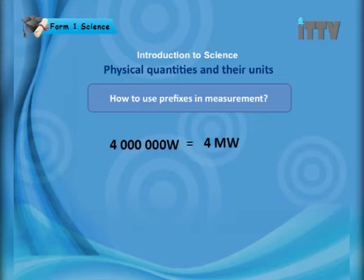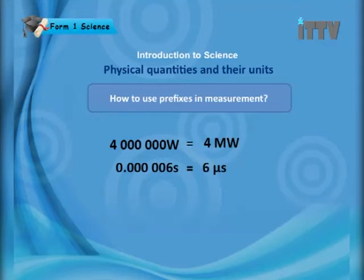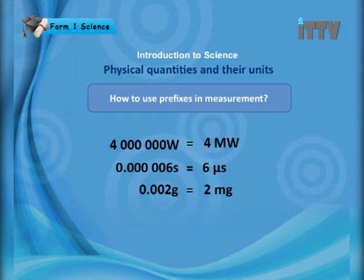Here are examples of how to use prefixes. 4000 watts is equivalent to 4 kilowatts. 0.000006 seconds is 6 microseconds. And 0.002 grams is 2 milligrams. This is how you use prefixes to shorten the written value.